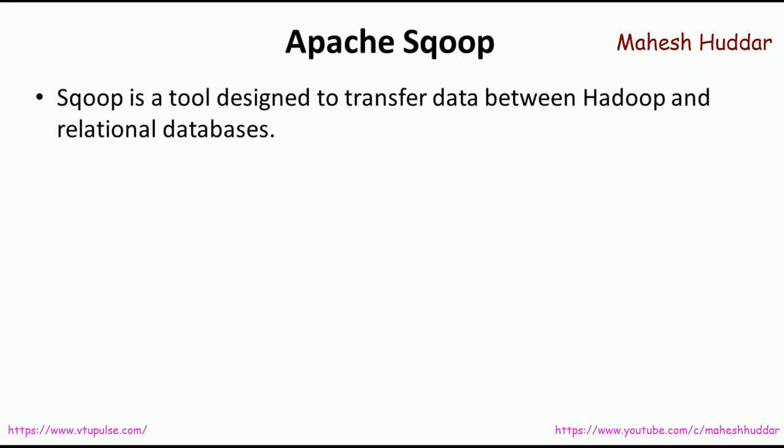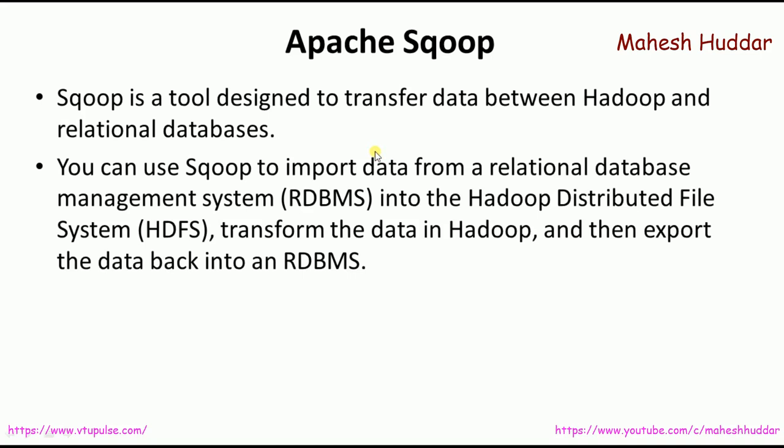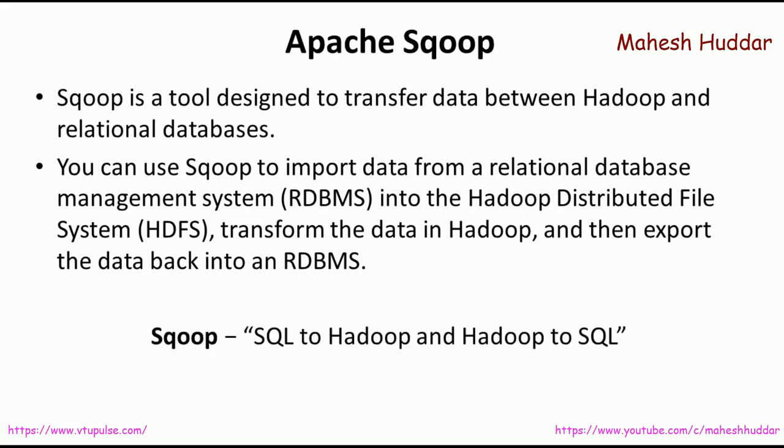Apache Sqoop is a tool designed to transfer data between Hadoop and relational databases. You can use Sqoop to import data from relational database management systems (RDBMS) into Hadoop Distributed File System (HDFS). Similarly, the data can be exported from HDFS into RDBMS. Hence, Sqoop is also called the SQL to Hadoop and Hadoop to SQL tool. The name Sqoop came from SQL and Hadoop — SQL from SQL, and OOP from Hadoop.